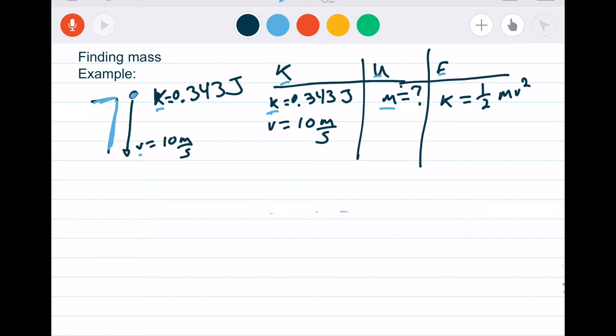So I've gone ahead and drawn our picture. I've got a cliff, I've got my egg. It drops. We have an energy of 0.343 joules. Its velocity when it reaches the ground is 10 meters per second.